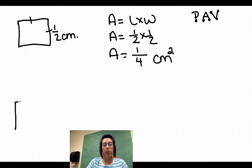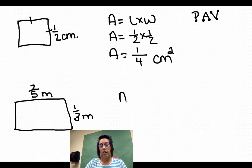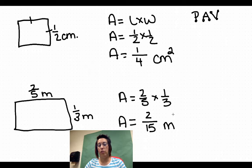So let's go ahead and look at a rectangle. If we call this side two-fifths of a meter and this side one-third of a meter. Area equals two-fifths times one-third. Area equals two times one is two. Five times three is fifteen. So area equals two-fifteenths meters squared. Make sure that we square that.